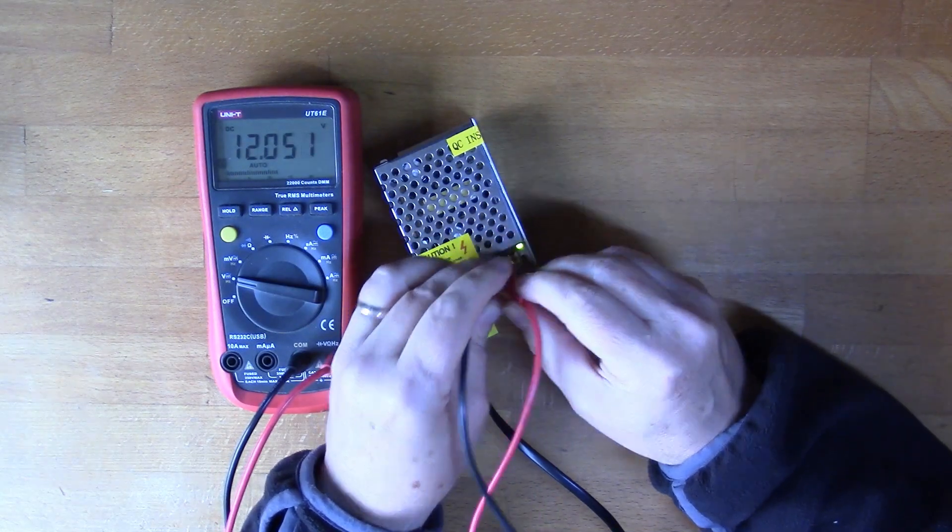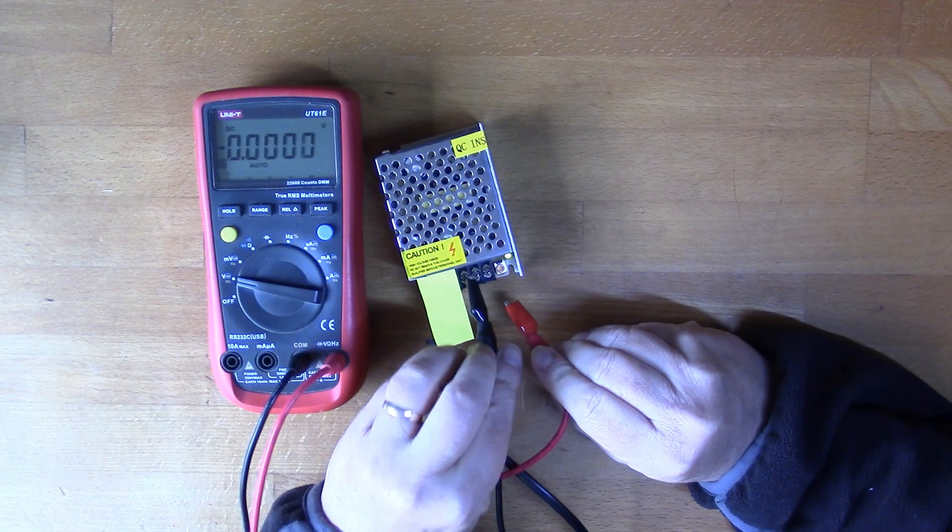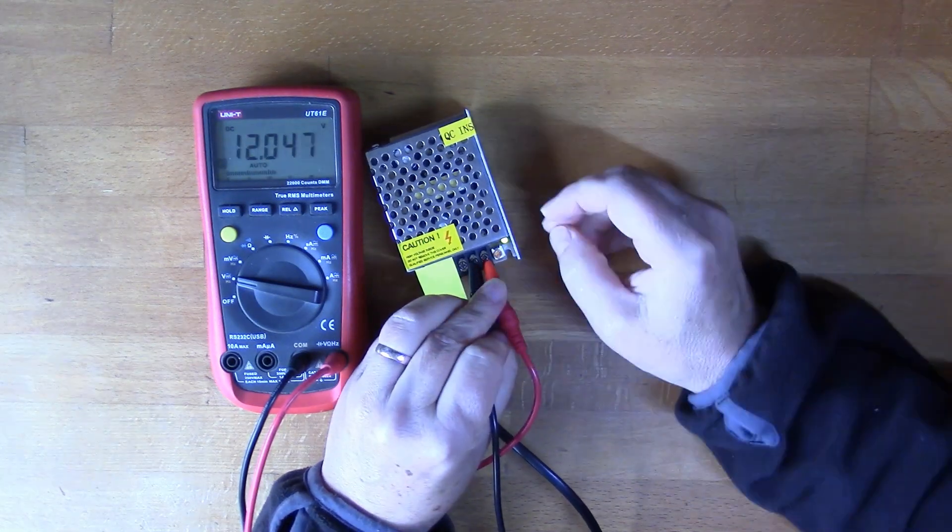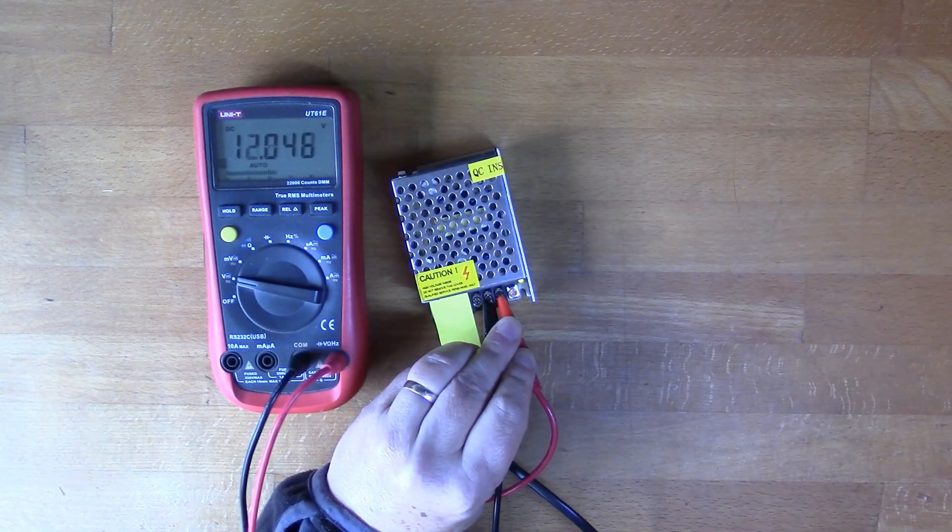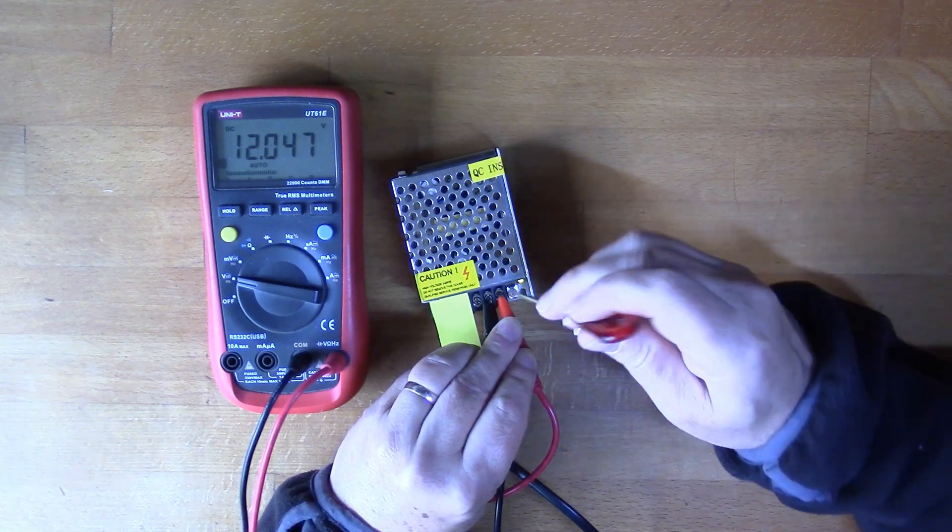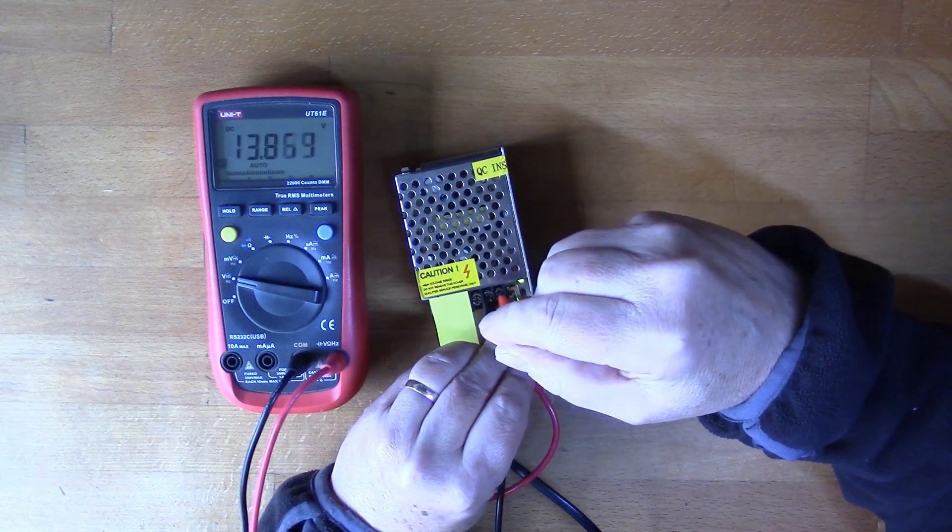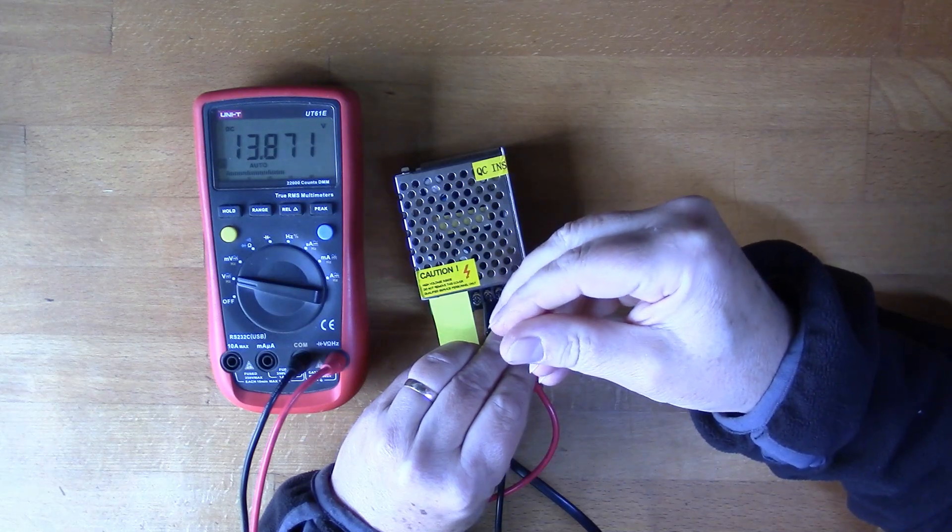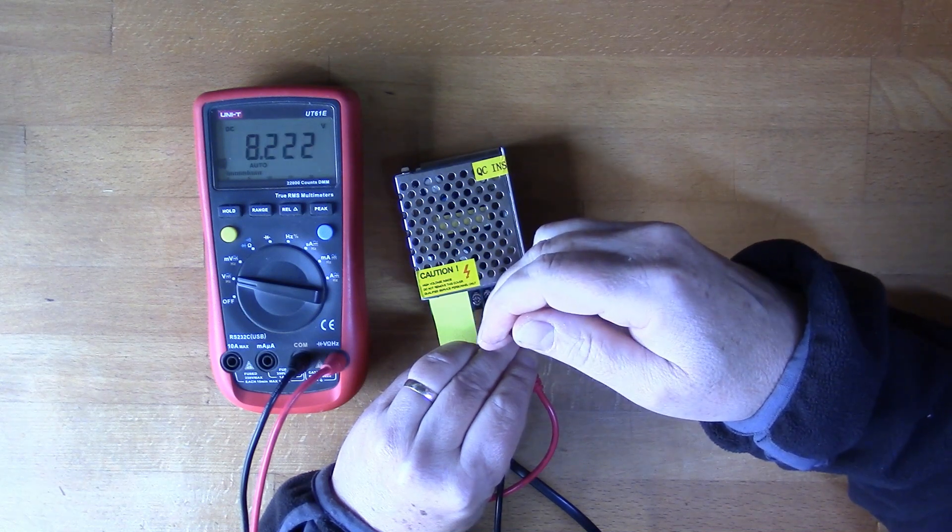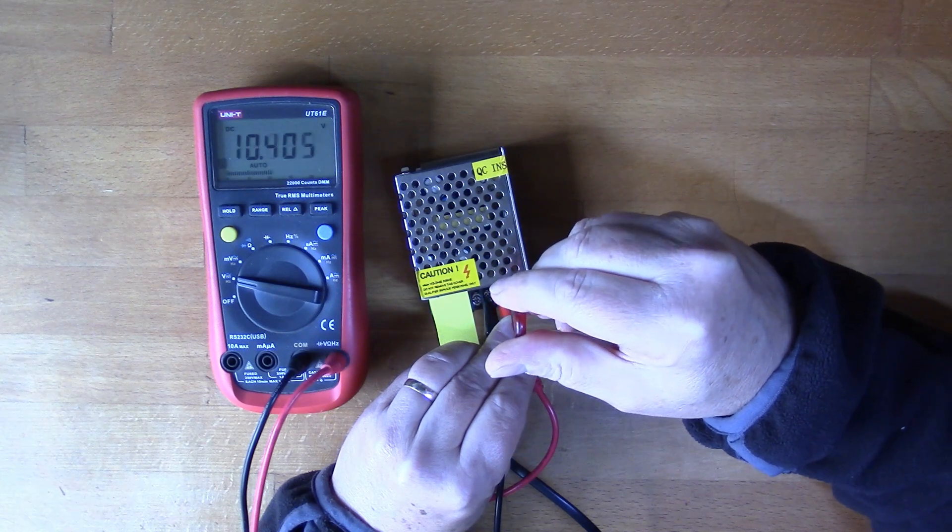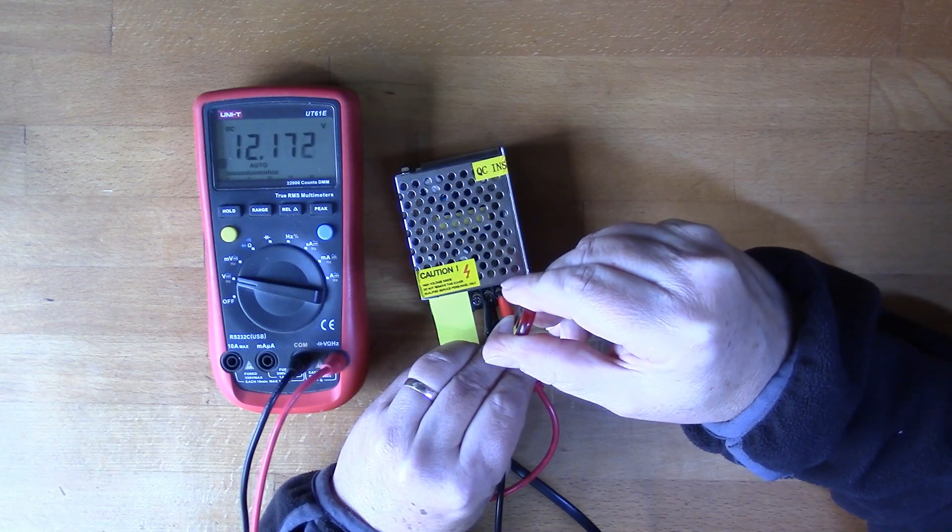12 volts. Let's see if I can do this in a way that you can see what I'm doing. So we'll turn this adjuster. We can go up to 13.8 volts or down to about 8 volts. I'm not sure how useful that is, but in any case...